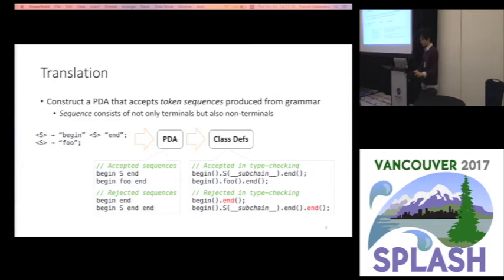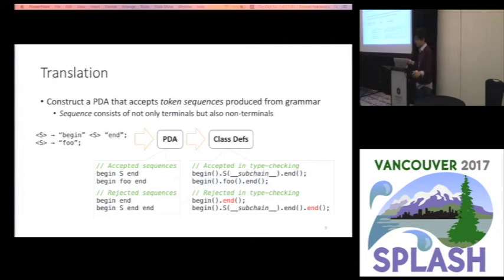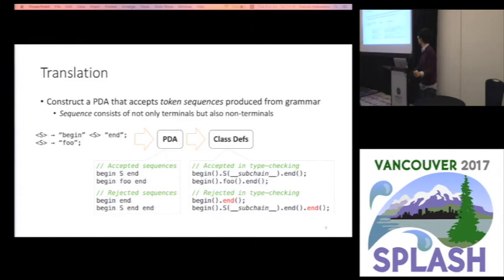For example, in the case of the grammar shown on the left, such a PDA accepts sequences such as: begin, S, end; or begin, full, end. By encoding this PDA into class definitions, a fluent API can be obtained, and the encoding scheme will be explained later. Basically, each terminal is encoded into a method with an argument, and a non-terminal is encoded into a method taking a subchain as its argument.